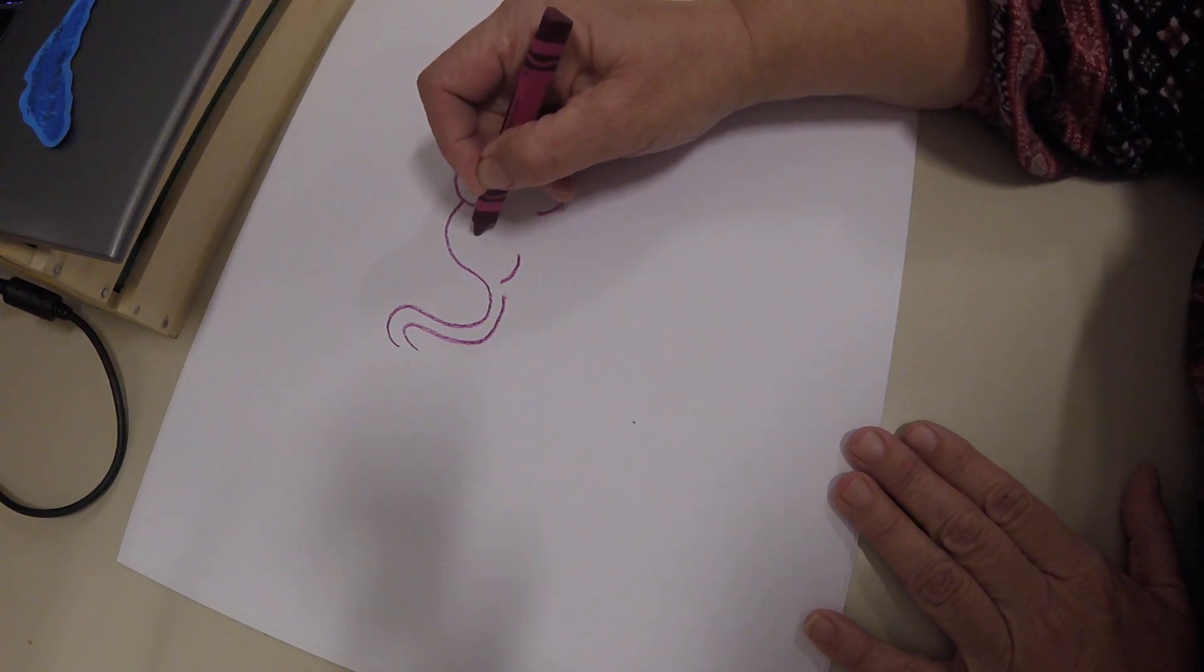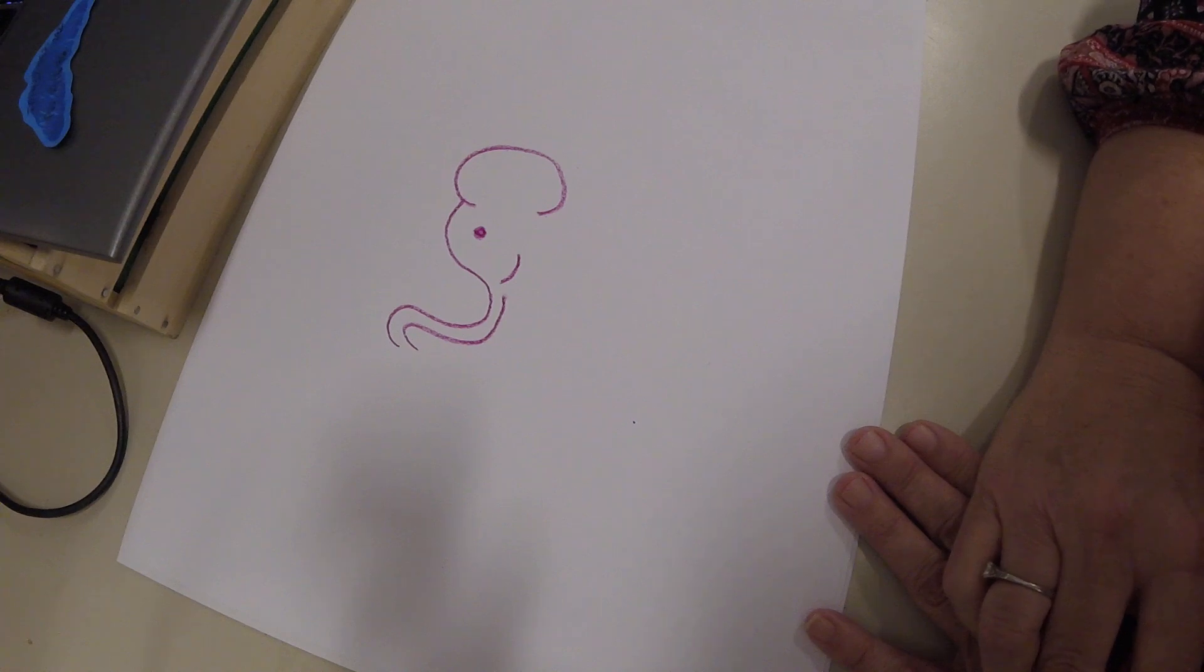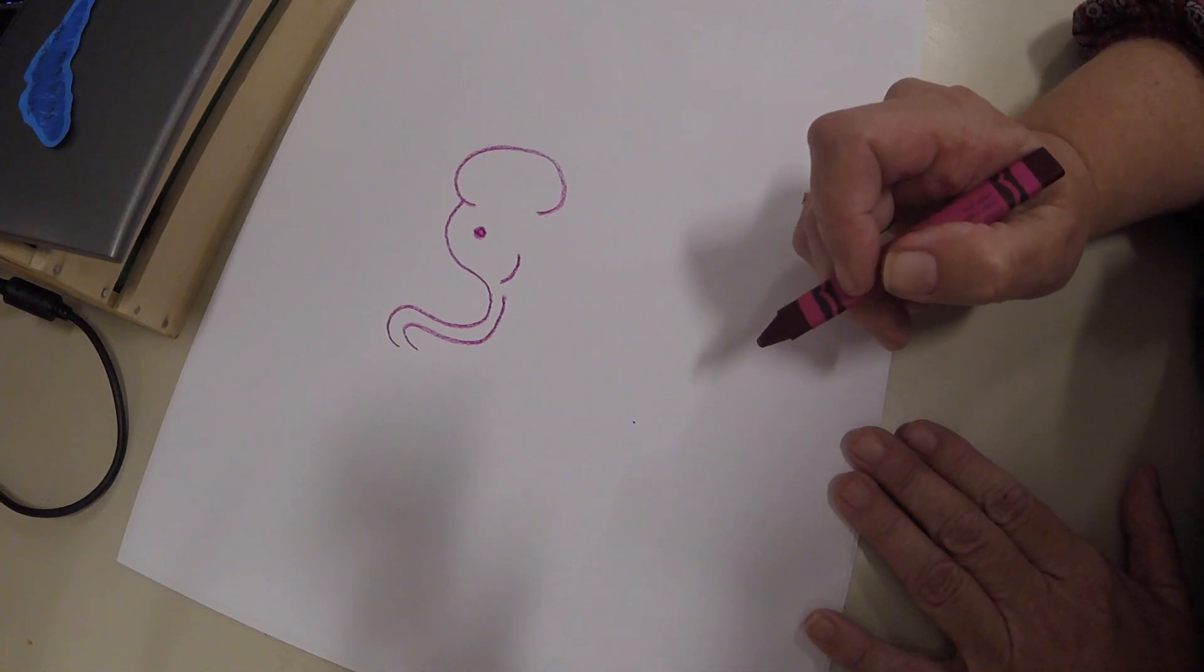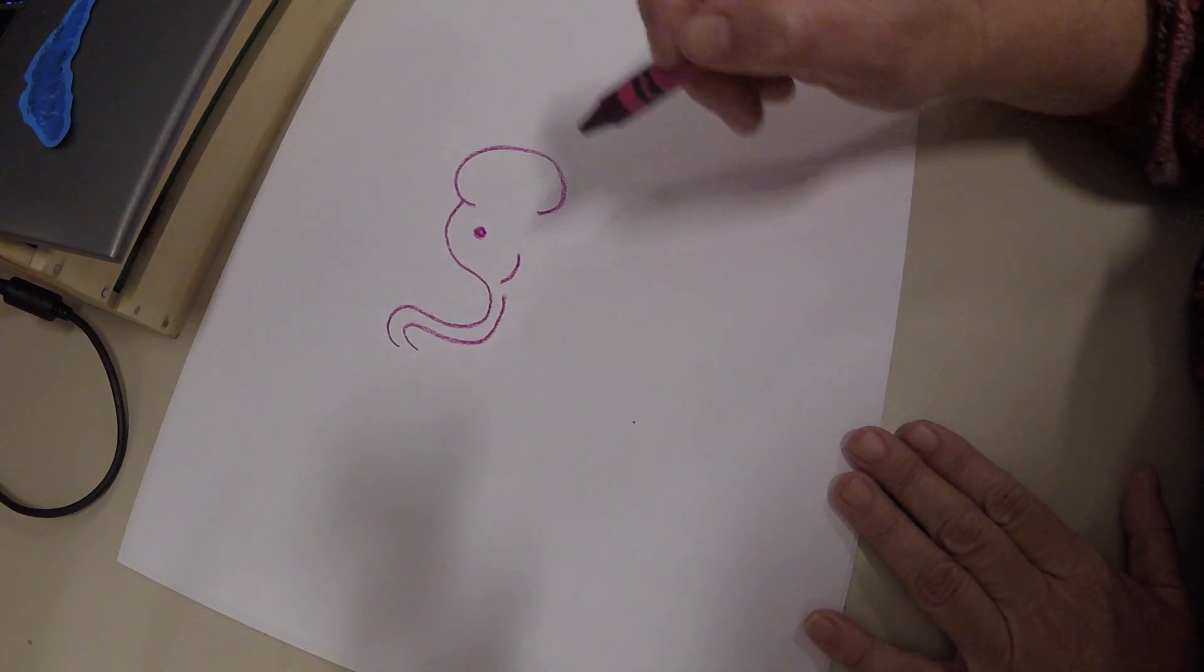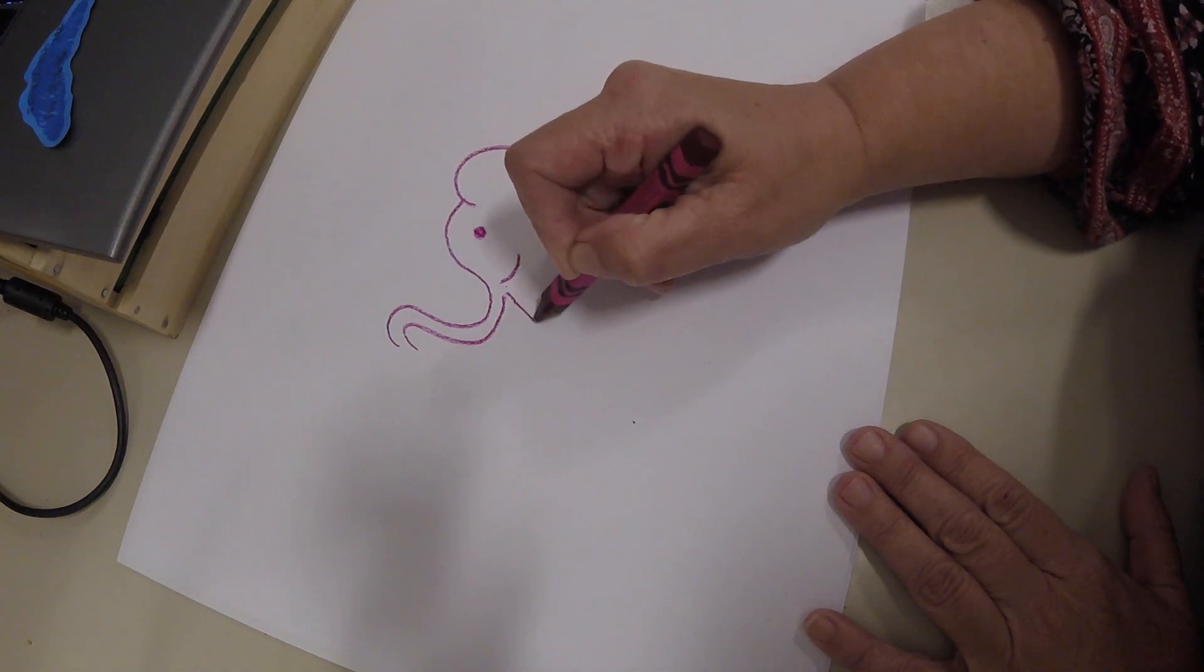We're going to put in a little eye for our elephant. And then we're going to add a tusk. Now that oddly enough, it's going to feel like the letter V.